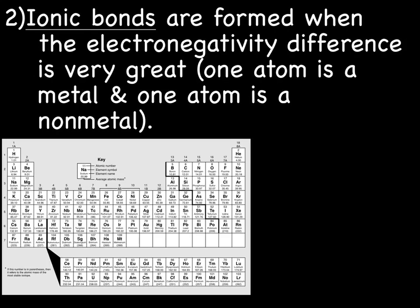So, ionic bonds are formed when the electronegativity difference is very great. And when does that happen? That happens when one atom is a metal, and one atom is a non-metal.